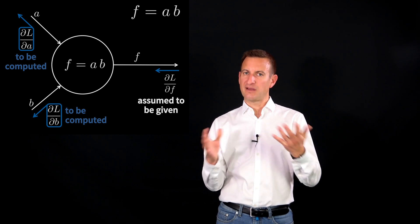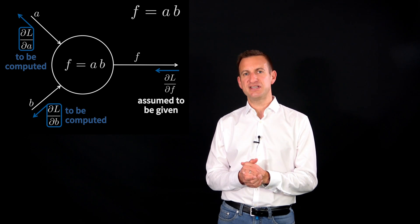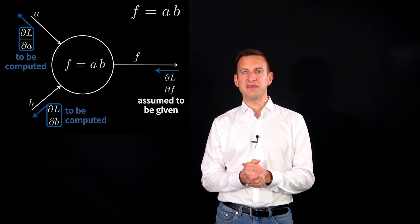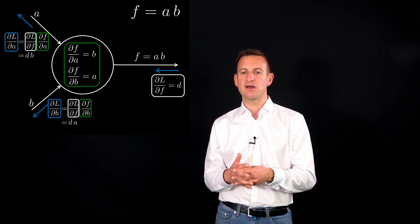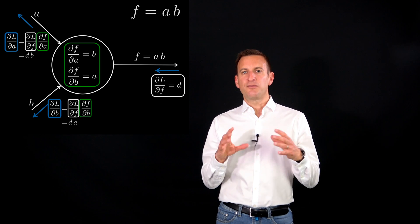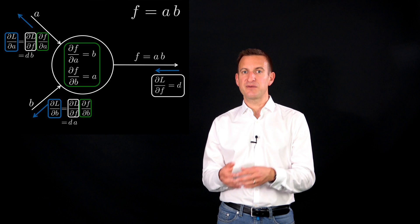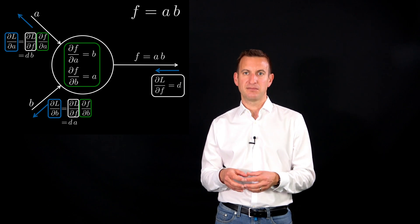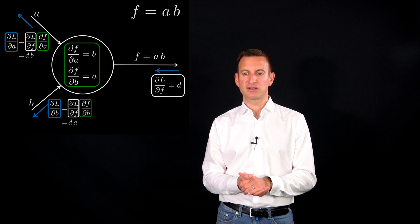And consider that it's somewhere in our computational graph and we already have some derivative information which is here coming from the right-hand side. dL derived with respect to df is some value d that we already know. And what we need to do for that node is simply we need to compute the first derivative of the function f with respect to a and b. And this is b and a just because it's a simple product of two values.